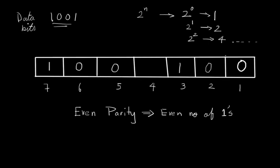So now our p2 is also found. Now let's go and find out p4. For p4 you need to check the 4 bits which are in concatenation, which is 4, 5, 6, and 7.